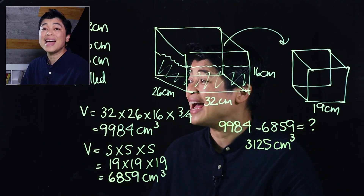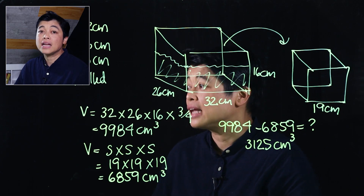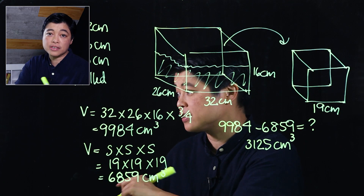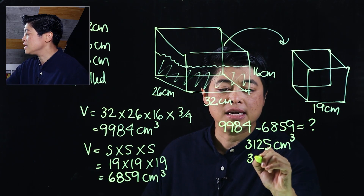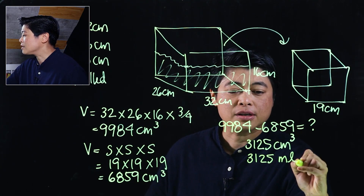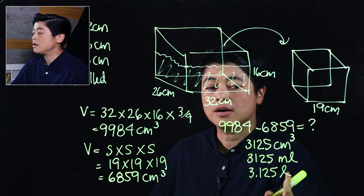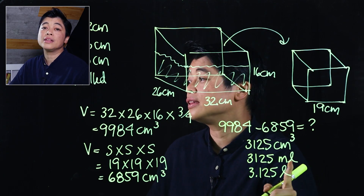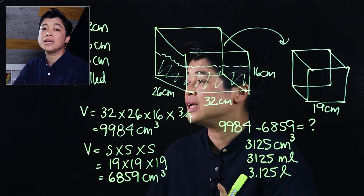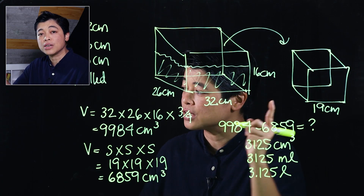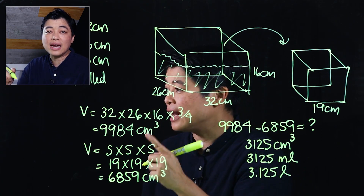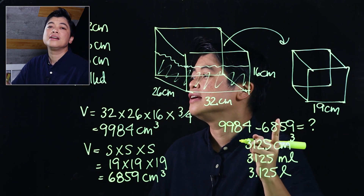Subtracting gives 3,125 cm³. Since the problem says to write the answer in liters (not liters and milliliters), this is 3,125 milliliters, which equals 3.125 liters — dividing by 1,000 moves the decimal three places to the left. That concludes Lesson 4 of Chapter 8, which also concludes the chapter.